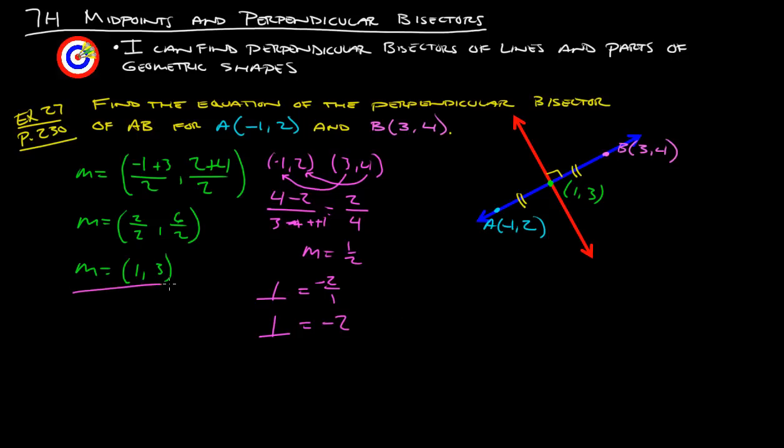Now we have a point that's on that line, and we also have the slope, so let's figure out what the equation of this perpendicular line is. Let's use our y minus y1 equals m times x minus x1, which is our point-slope formula. We have y minus our y value, which is 3, equals m, which is -2, and we do x minus the x value, which is 1.